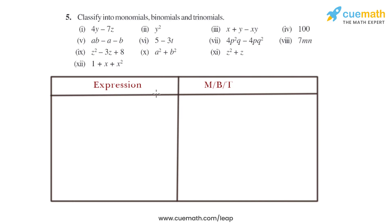Question 5 of this exercise says: classify into monomials, binomials, and trinomials. First, we will learn what monomials, binomials, and trinomials are. Monomials are single terms. Binomials are those which have two terms, and trinomials are those having three terms. We will write the initials: M for monomial, B for binomial, and T for trinomial.